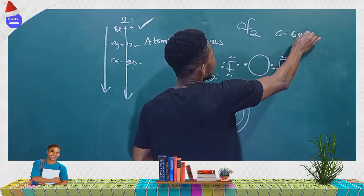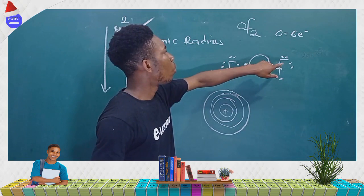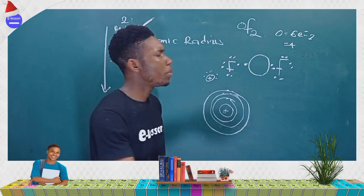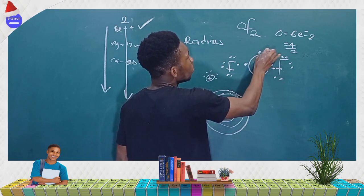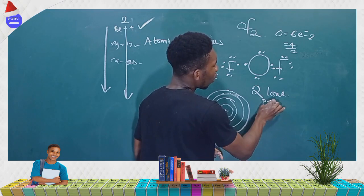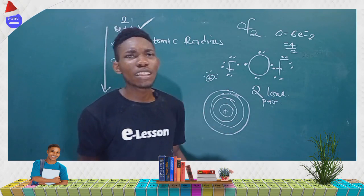Oxygen started with 6 electrons and used 2 for bonding, leaving 6 − 2 = 4 electrons. These 4 remaining electrons form lone pairs: 4 ÷ 2 = 2 lone pairs on the central oxygen atom. So the central oxygen has 2 lone pairs of electrons.